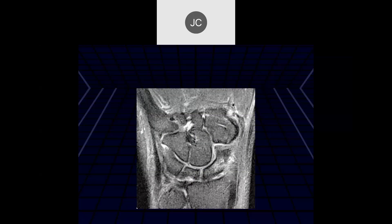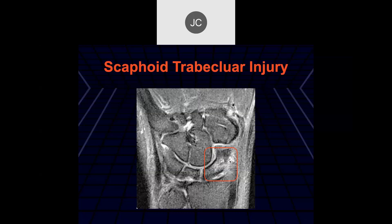This is a coronal low-field STIR sequence. We see edema in the scaphoid — possibly a little interruption of the cortex on the radial side. This was a trabecular bone injury. The overall shape of the scaphoid was normal, and this was treated conservatively.